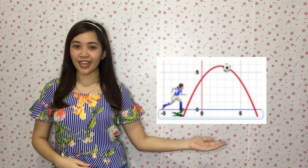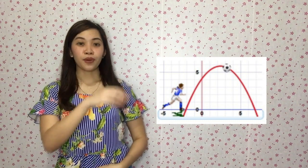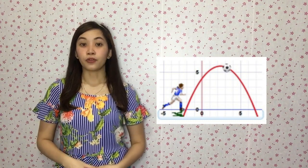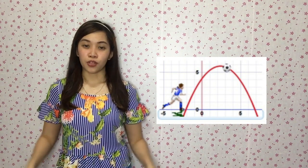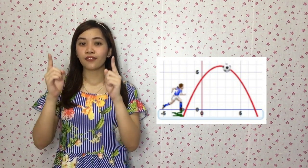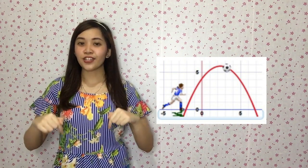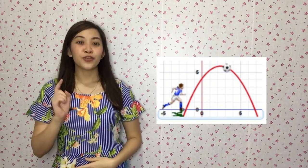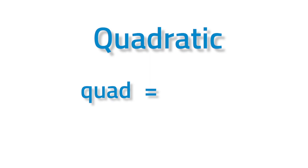Awesome, right? Take a look at this image beside me. When you throw a ball, or shoot an arrow, fire a missile, or throw a stone, it goes up in the air, slowing down as it travels, then comes down faster and faster. By using a quadratic equation, you can tell its position at all times. The name quadratic comes from quad, meaning square, because the variable gets squared like x squared.